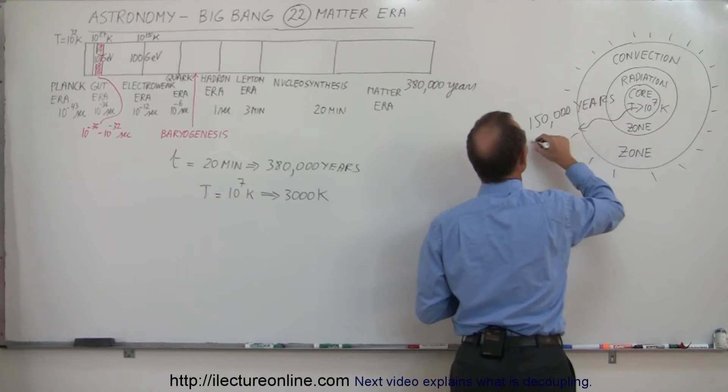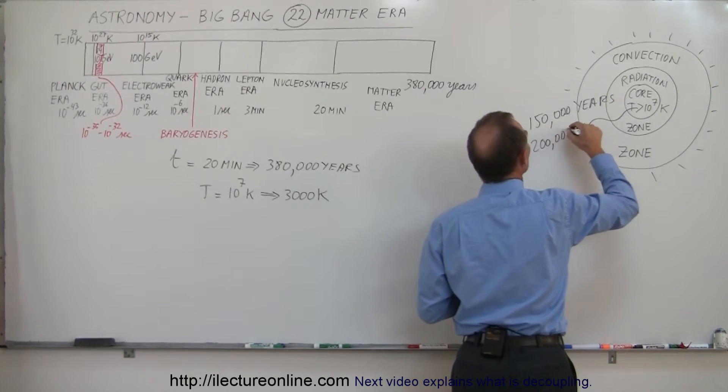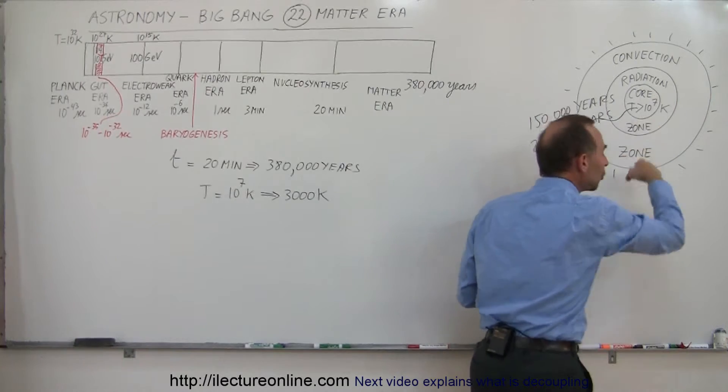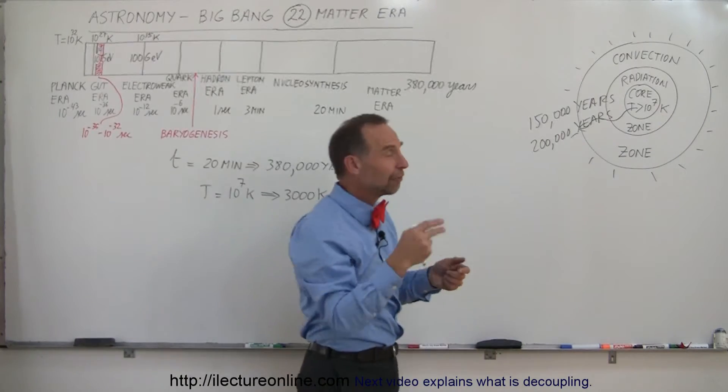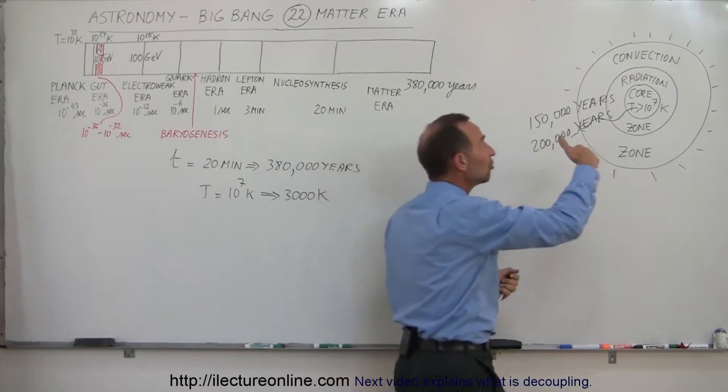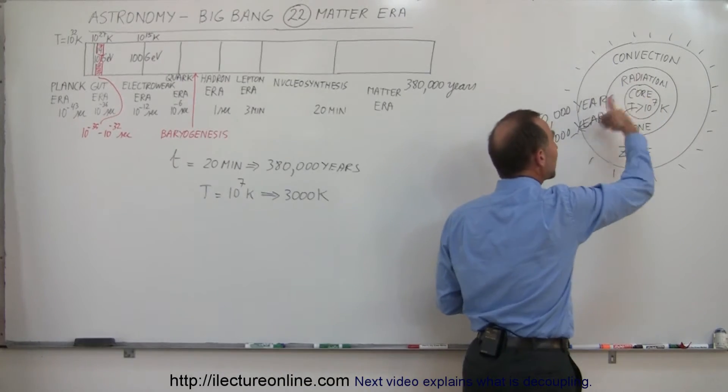It takes about 150,000 to about 200,000 years for radiation, for the photons to work their way all the way out from the center of the sun to the outside of the sun. And all along more energy is being created trying to push that radiation out.